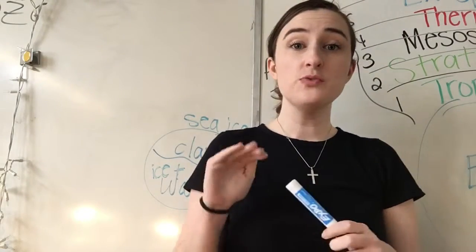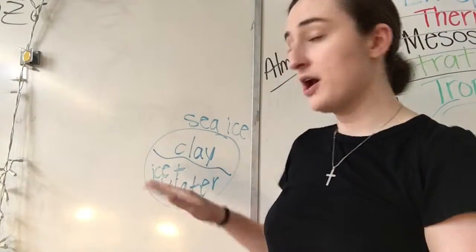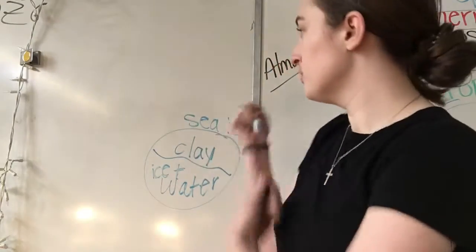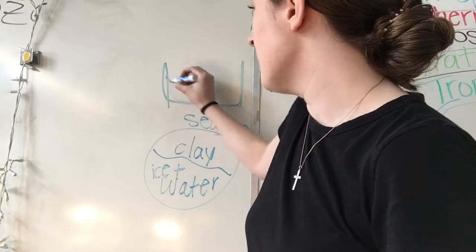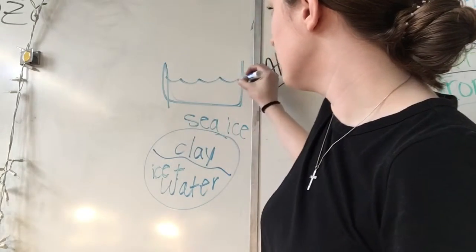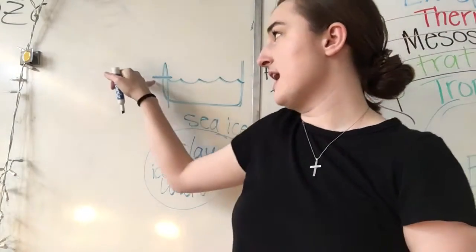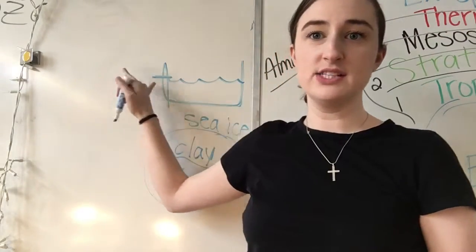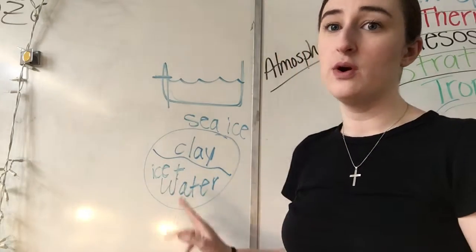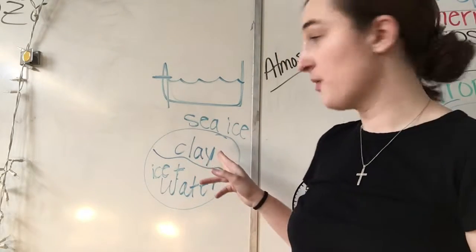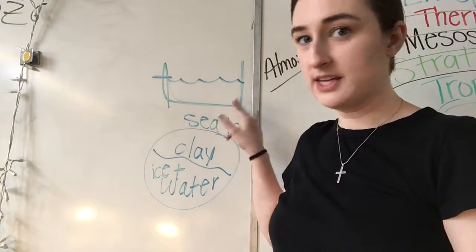Then you are going to mark where the sea water rises to. This is the side view — we have the container and we have the water. We are going to put a line on the container showing where it starts. So the sea ice container manager is going to do this: half clay, half ice and water, and mark the container.